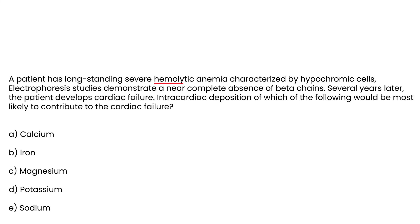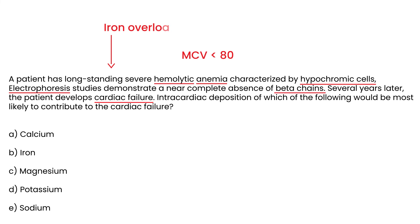Here's a clinical vignette: a patient has long-standing severe hemolytic anemia with an MCV of less than 80, characterized by hypochromic cells. Electrophoresis demonstrates a near complete absence of beta chains. Several years later the patient develops cardiac failure. This connects back to iron overload — because of thalassemia, the patient becomes anemic, receives multiple transfusions, and the iron from those transfusions deposits in the body, particularly in cardiac muscle, leading to cardiac failure. The answer to what intracardiac deposition contributes to cardiac failure is iron.